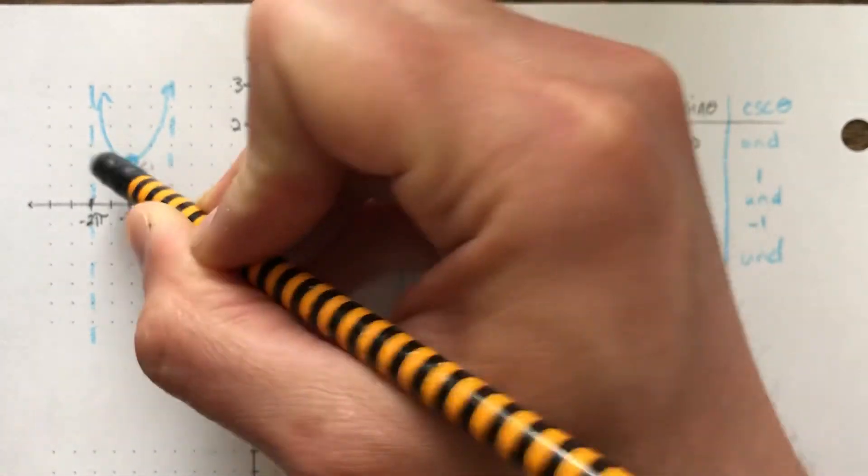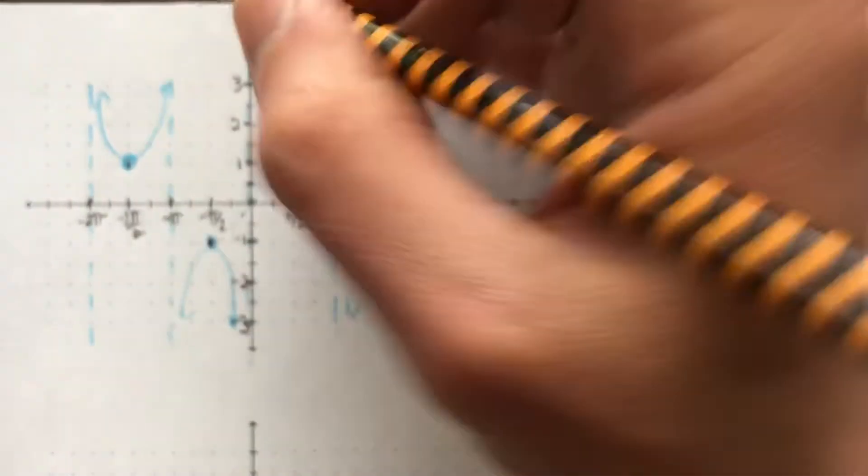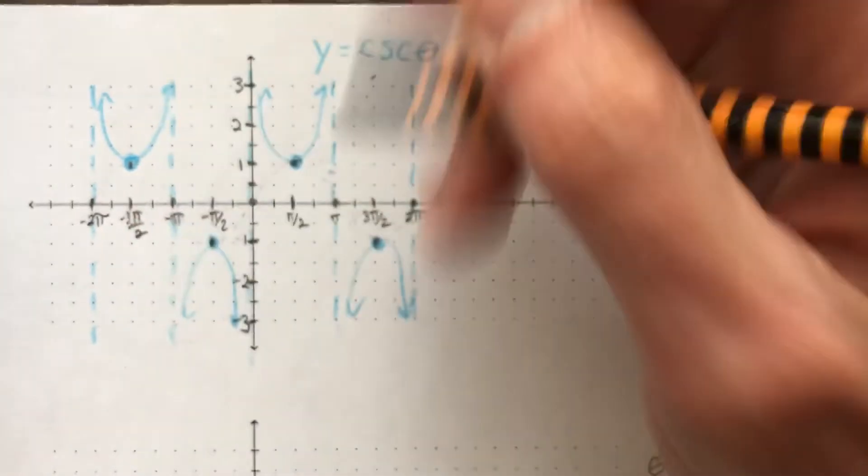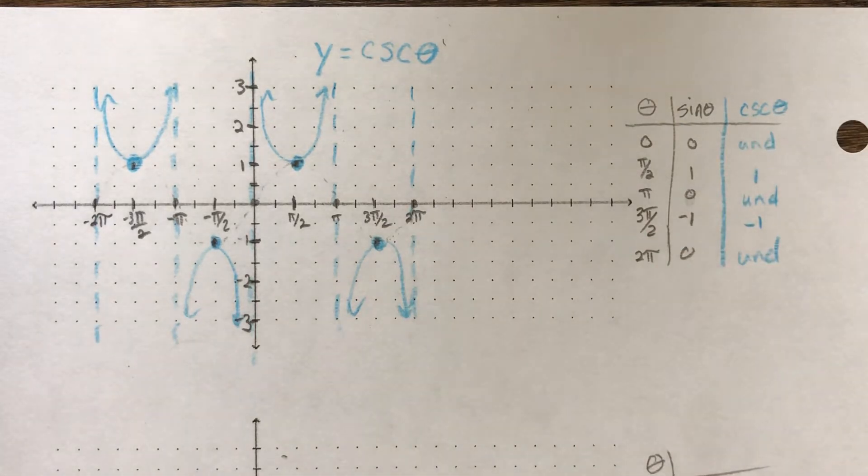I'll show you guys when you go to actually graph everything. You don't even really need to do that at all, unless you want to. If you feel like you need to to kind of help you, then do it. But if you do, just make sure you erase it afterwards, okay? And that's the cosecant graph. That's all it takes.